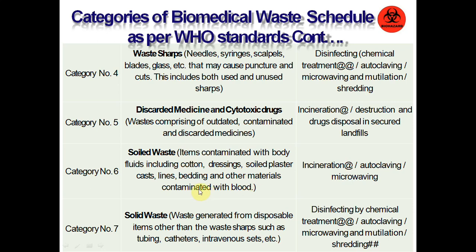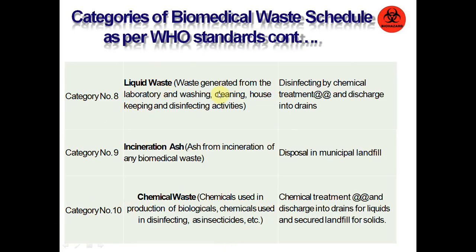Category 6 is solid waste such as soil, plaster, cotton, and dressings, treated by incineration or autoclaving. Category 7 is solid waste like tubing, catheters, and IV sets, treated by autoclaving, microwave, or shredding. Category 8 is liquid waste generated from laboratory washing, cleaning, and housekeeping, treated with disinfectants. Category 9 is incineration ash produced after incineration of biomedical waste, disposed in landfills.